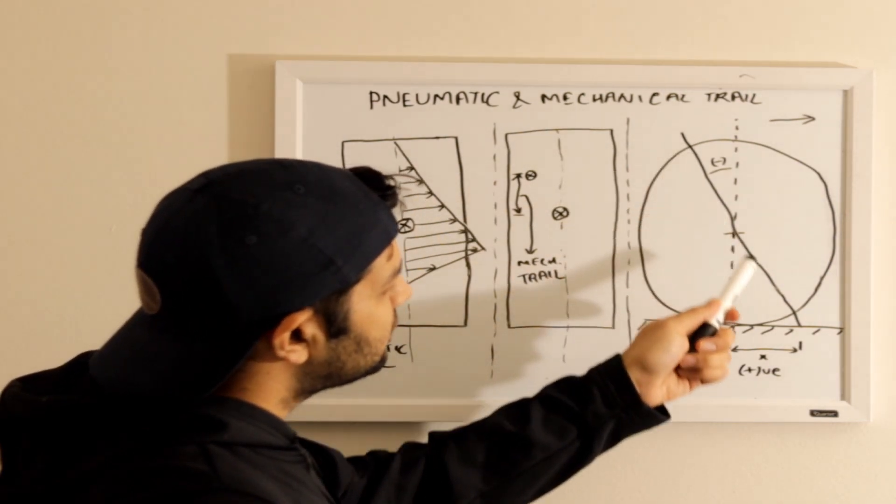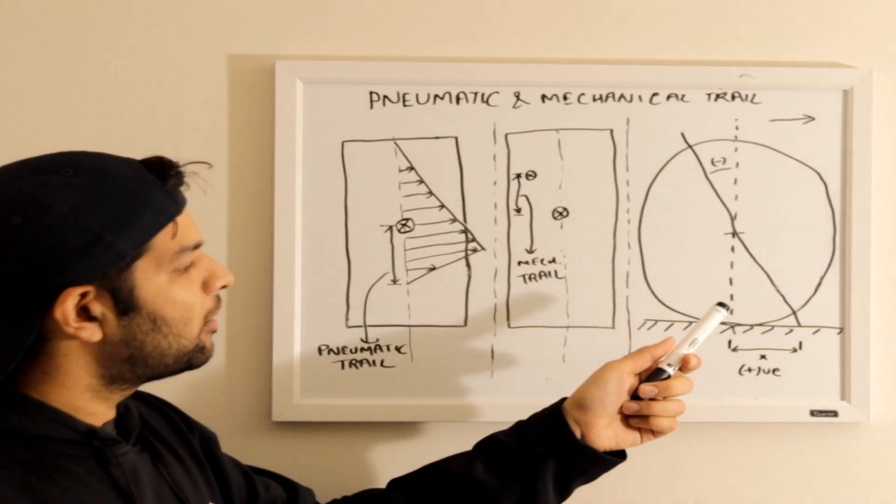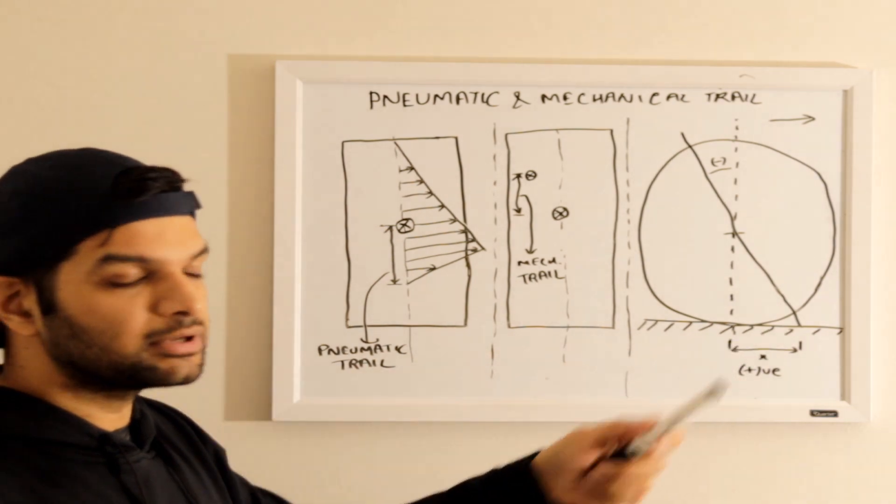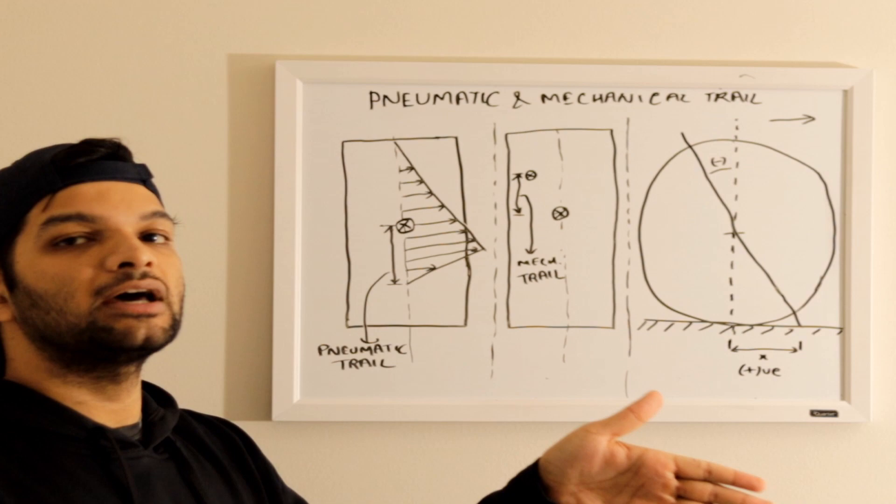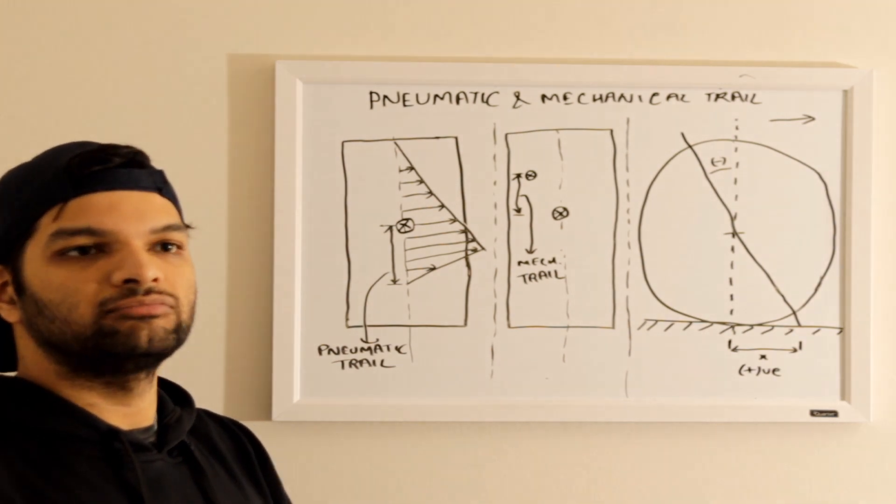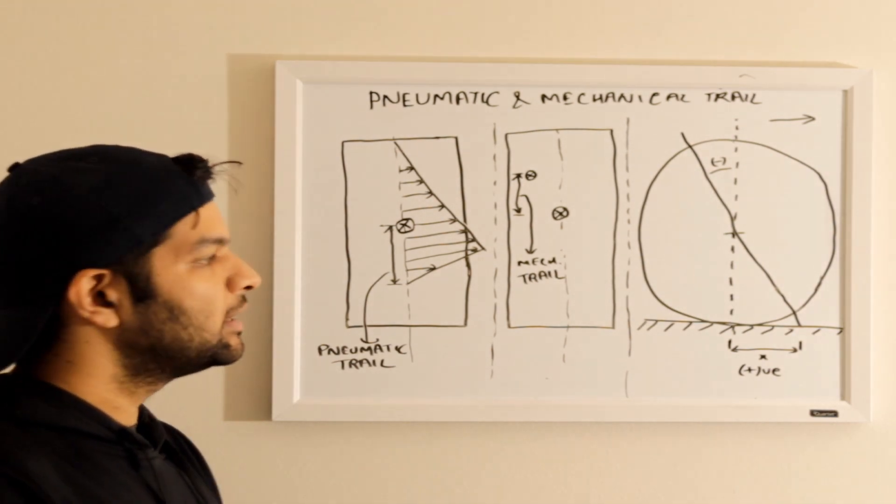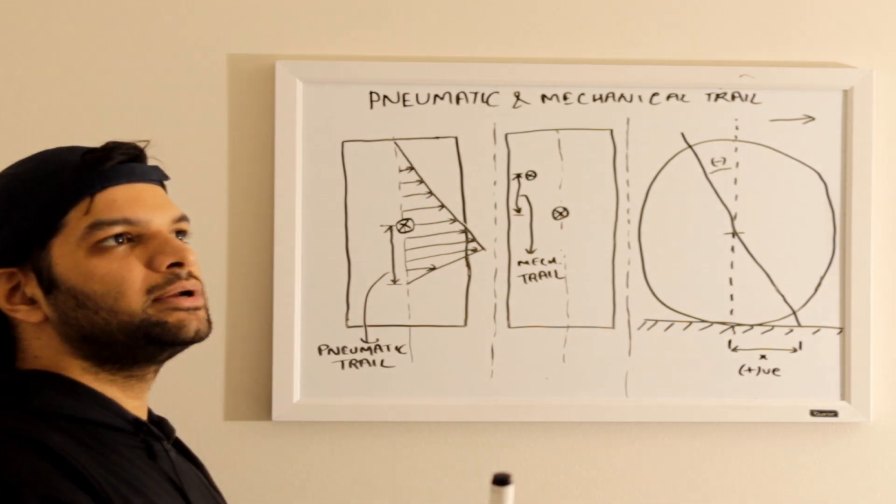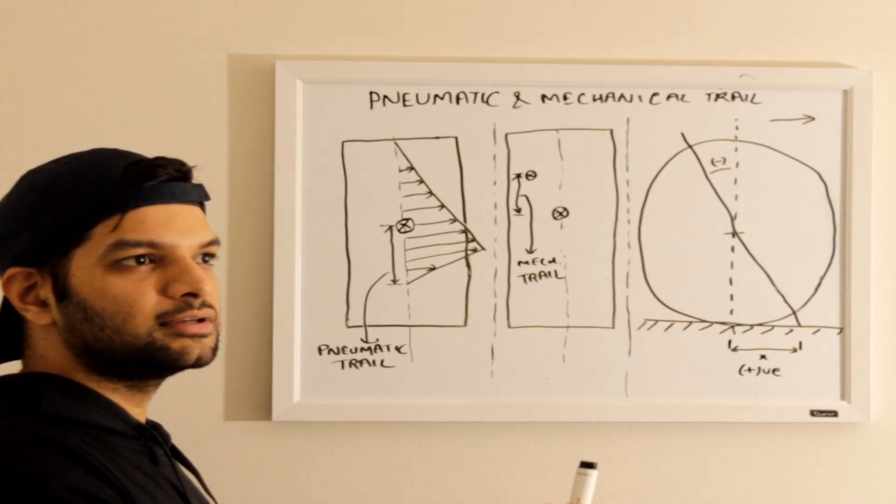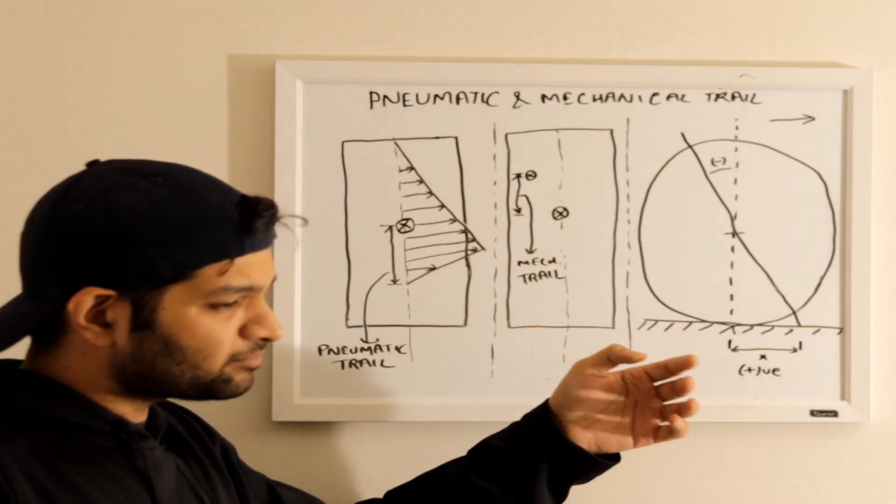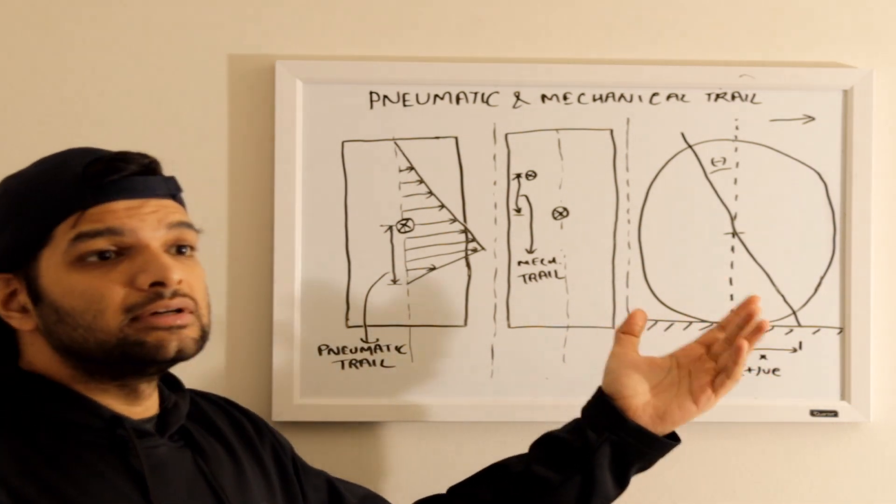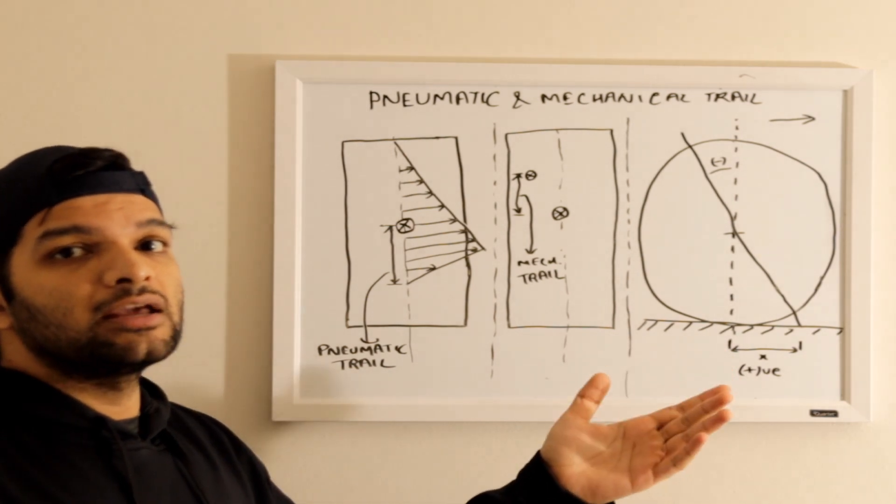So what happens when we have positive caster or positive distance of the kingpin from the center point of the tire? It helps in aligning the tire or giving the tire the direction where to go, increasing vehicle stability. The greater the angle, the more difficult it will be to turn the steering wheel in that particular direction, but also it will be helpful in steering returnability or aligning moment.